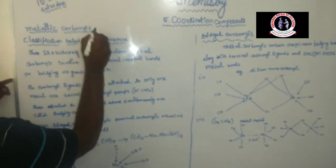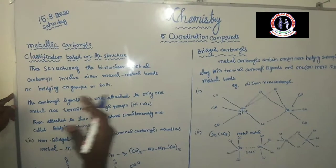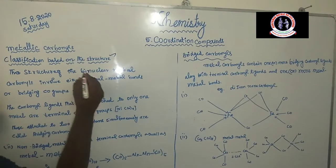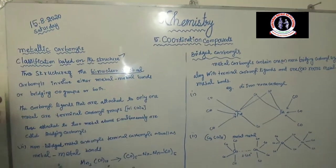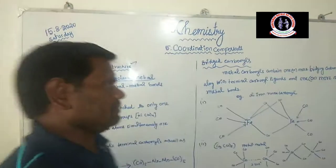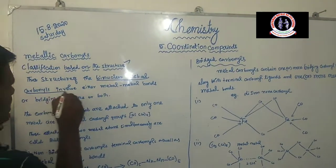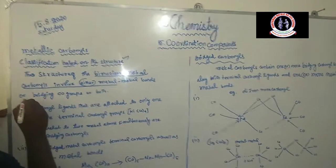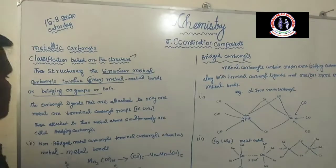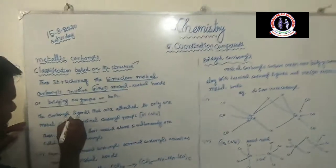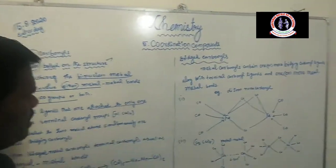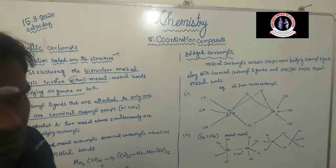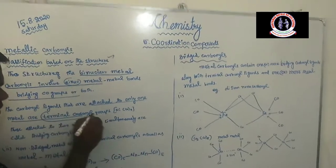Metallic carbonyls are further classified based on their structure. For binuclear metal carbonyls — binuclear meaning two metal atoms — the metal carbonyls involve either metal-metal bonds or bridging carbonyl groups or both. The carbonyl ligands that are attached to only one metal atom are called terminal carbonyls.